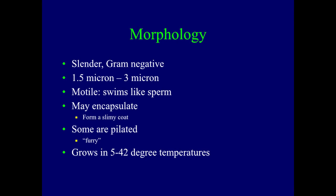It can encapsulate, forming a slimy coat that covers it, and all its neighboring bacteria can get together covered by this slime. Sometimes it's pilated — it has little pili, hair-like structures coming out of it — and long flagella that help it move. It grows in a wide variety of temperatures from 5 degrees all the way up to 42 degrees, which is uncommon, as most bacteria are more particular about what temperature they like.